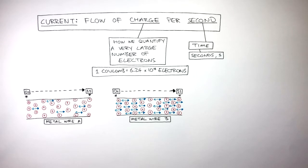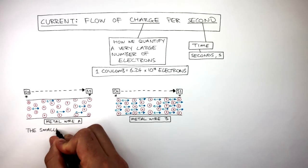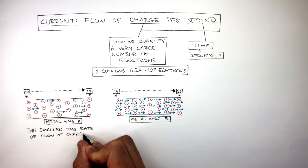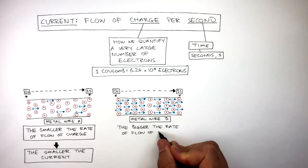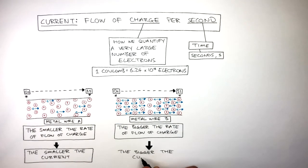So we can see in metal wire A, the smaller the rate of flow of charge, the smaller the current. Whereas in metal wire B, the bigger the rate of flow of charge, the bigger the current.